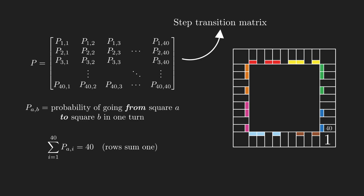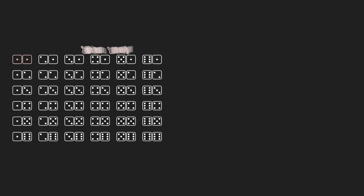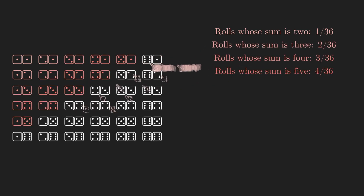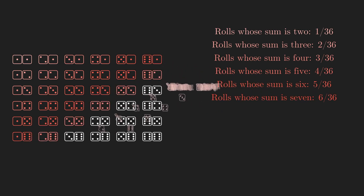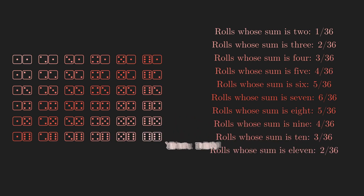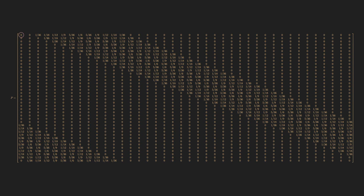First, we have to determine our transition matrix. The first step would be to represent the probabilities when we throw the dice. Since there are 36 possible combinations of the sides of two dice, for each number 2 to 12, the probability of going forward that amount of squares would be the number of combinations which add up to that number divided by 36. Pay close attention to 6, 7 and 8, because they'll play an important role when we calculate the long-term probabilities. With this in mind, we can now add some numbers to our currently zero matrix. The probabilities we just saw represent the chances of going from one square to the next 12 squares. Clearly, the probability of moving forward only one square is zero, because we have two dice.